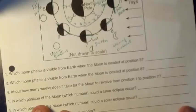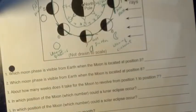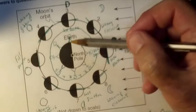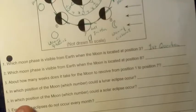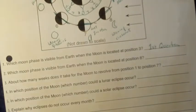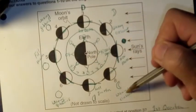Let's take a look at the questions. Which moon phase is visible from the earth when the moon is located in position three? When the moon is in position three, the moon is in its first quarter phase. Number two, which moon phase is visible from earth when the moon is located in position eight? In position eight, we see the waning crescent.